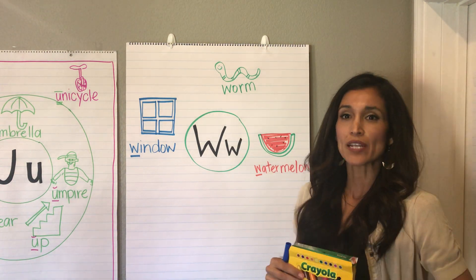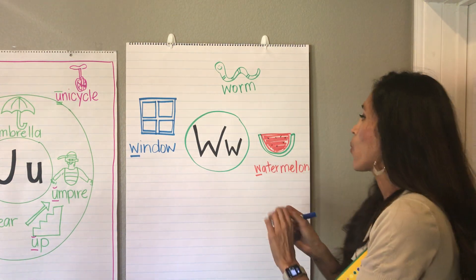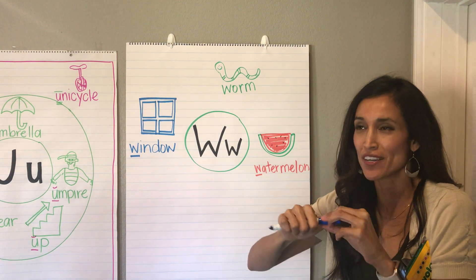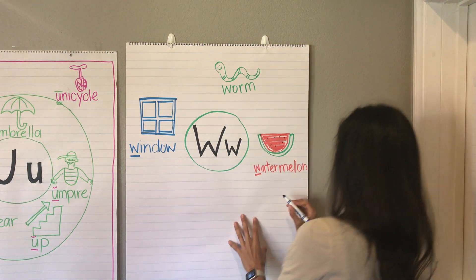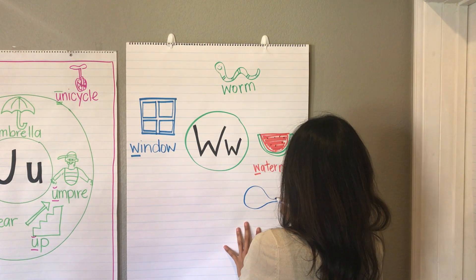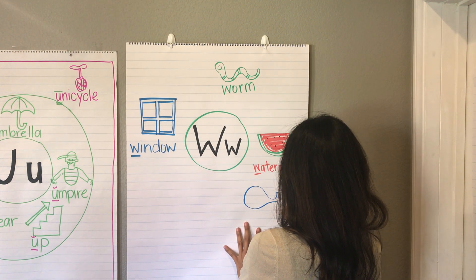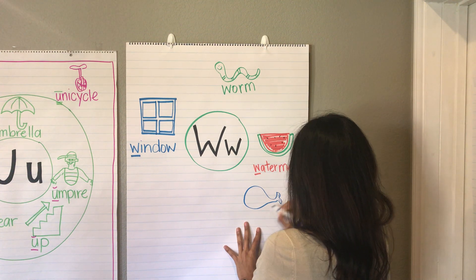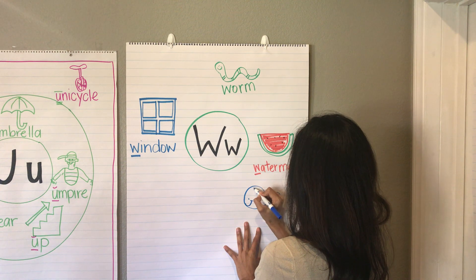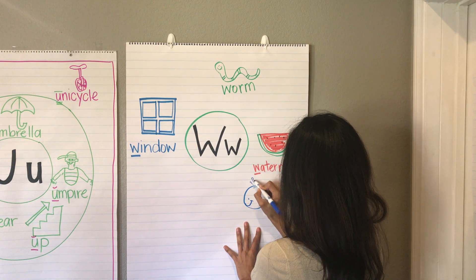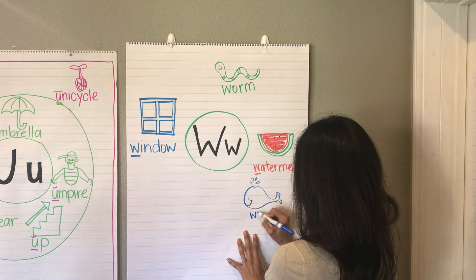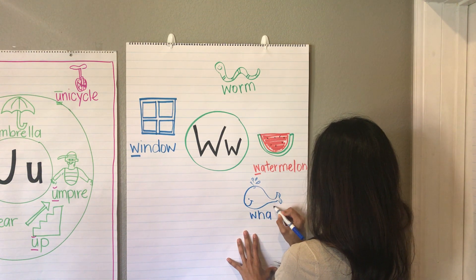That's an animal called a whale. A whale. So I'm going to try my best to draw a whale here. It's going to be a cartoon whale, but we'll try anyway. Here's my whale — kind of cute. Blowhole. Whale.